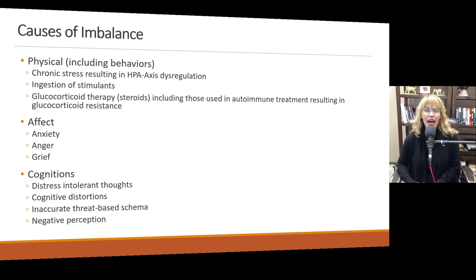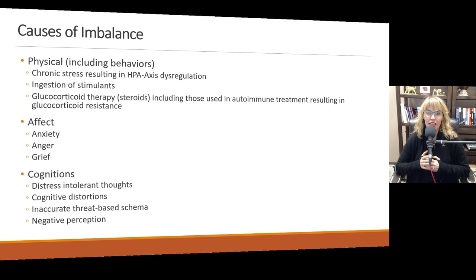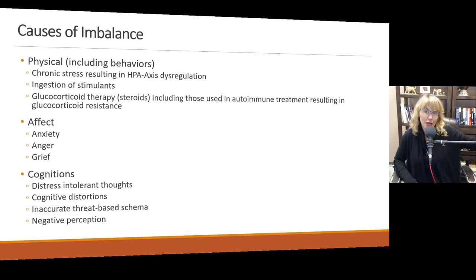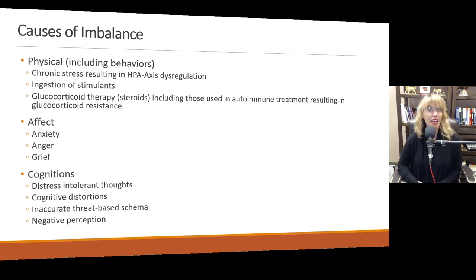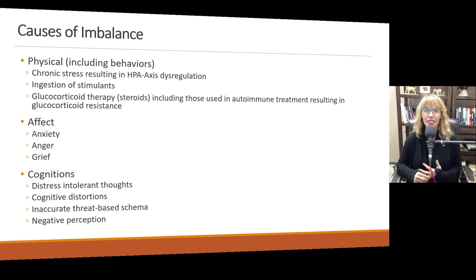Additionally, when people have what we call distress-intolerant thoughts or cognitive distortions — thinking in all-or-none terms, personalizing, catastrophizing, or using inaccurate threat-based schema — something that may have been a threat when they were six isn't a threat now, but if they're still using that schema, they may feel scared even though they're 26 and able to handle it. People who tend to have negative attitudes also tend to have negative affect, which causes that HPA axis to be regularly activated and ultimately potentially dysregulate, resulting in an imbalance of not only adrenaline but also cortisol and glutamate.